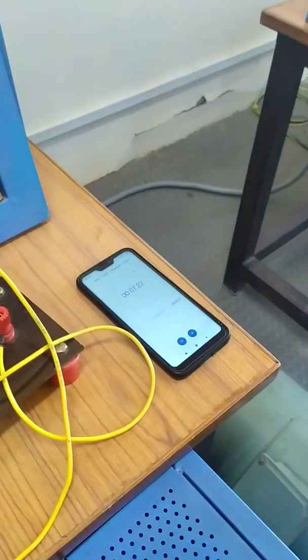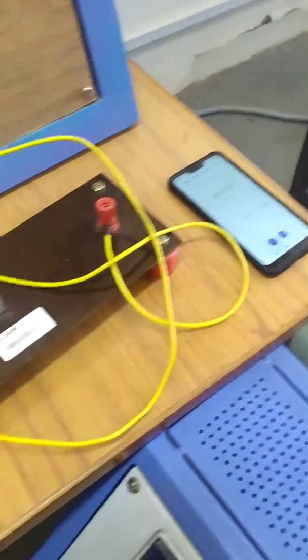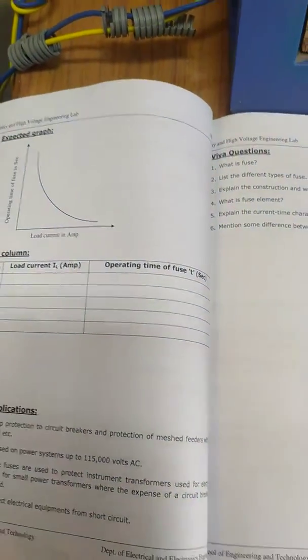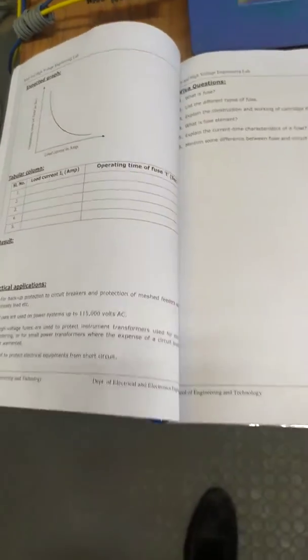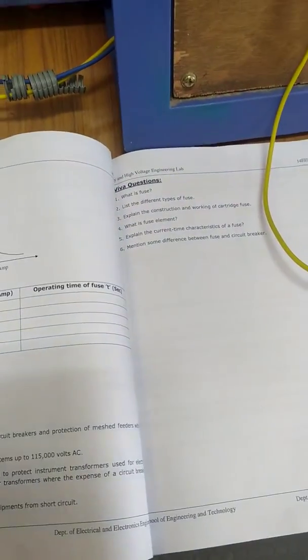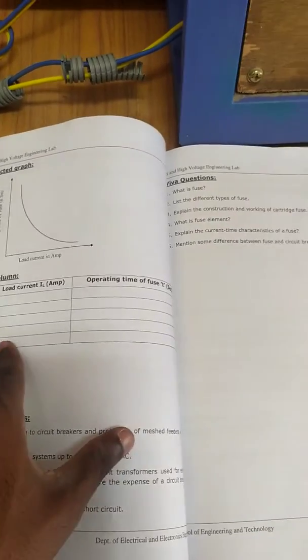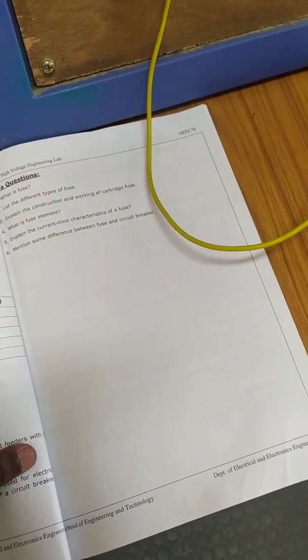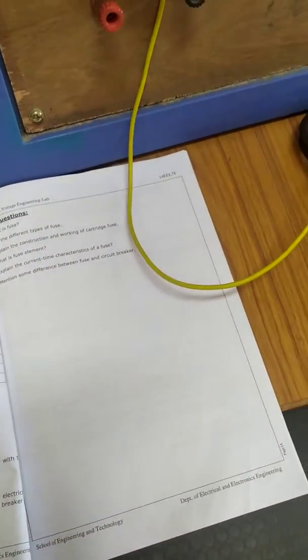We have to do this trials four or five times. Then you have to note down the load current and the operating time of fuse for different current.